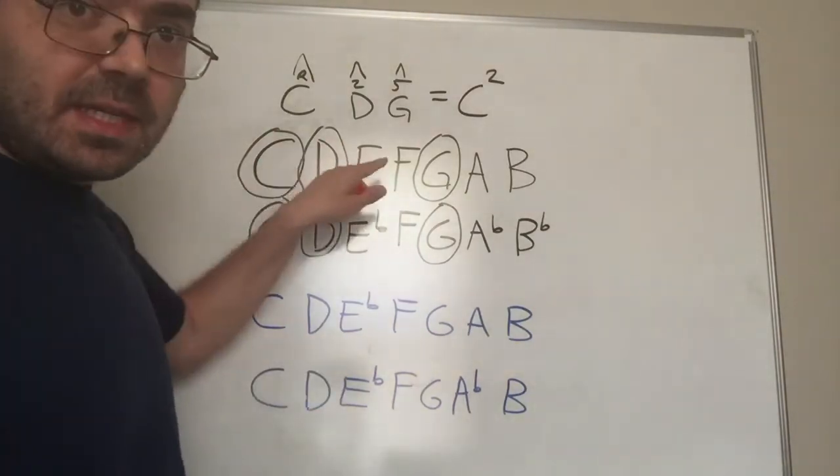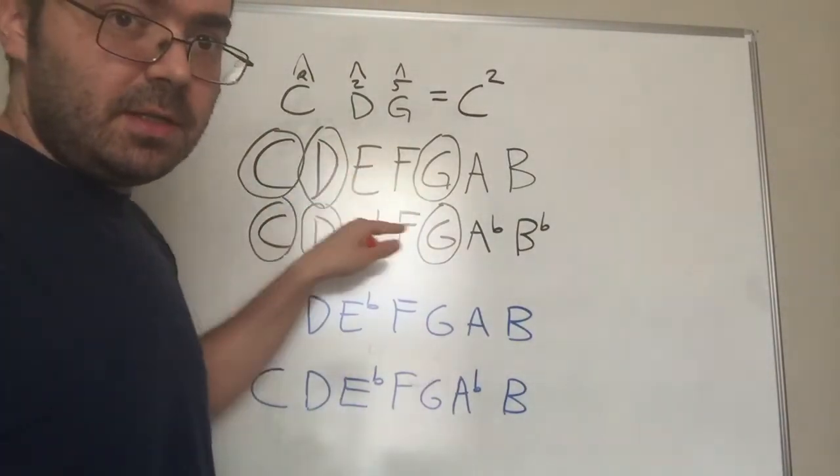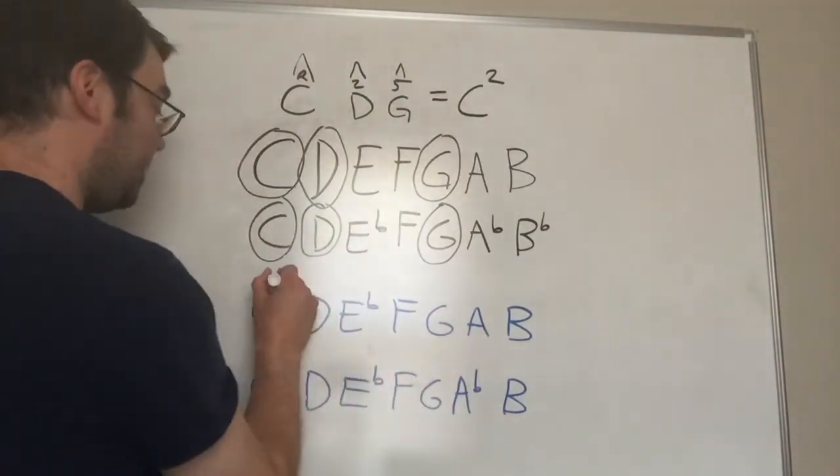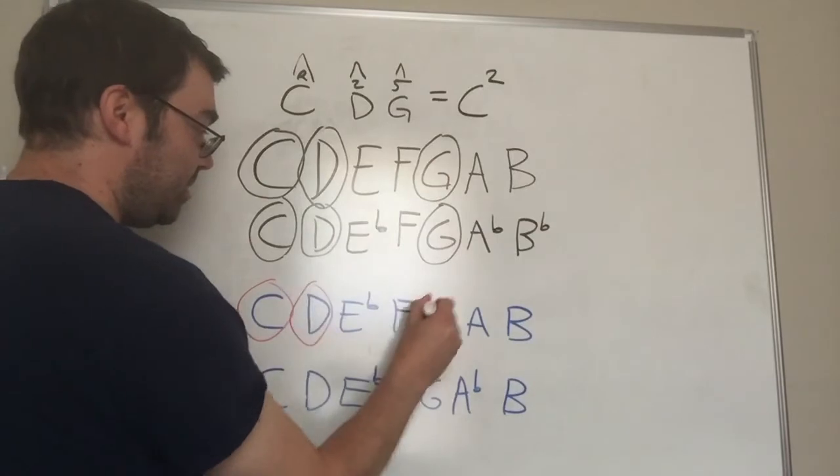All of these scales, the major, the natural minor, the melodic minor, and the harmonic minor all have in common C, D, and G.